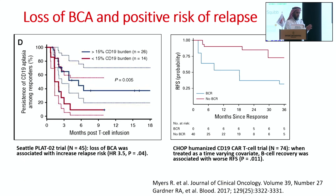Two additional studies show that loss of B-cell aplasia is associated with increased relapse risk. The PLAT-02 trial (45 patients) showed loss of B-cell aplasia was associated with increased relapse risk. A study from CHOP using humanized CD19 CAR-T in 74 patients also demonstrated that B-cell recovery was associated with worse relapse-free survival.